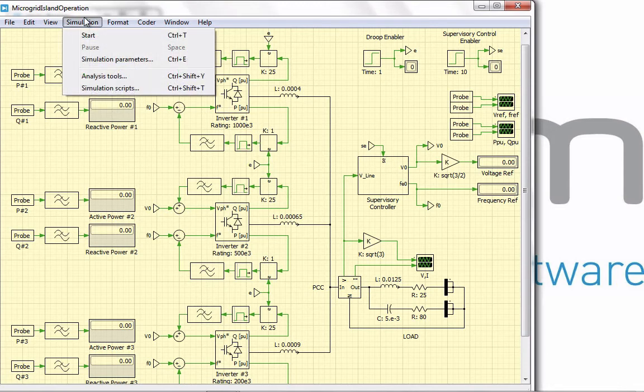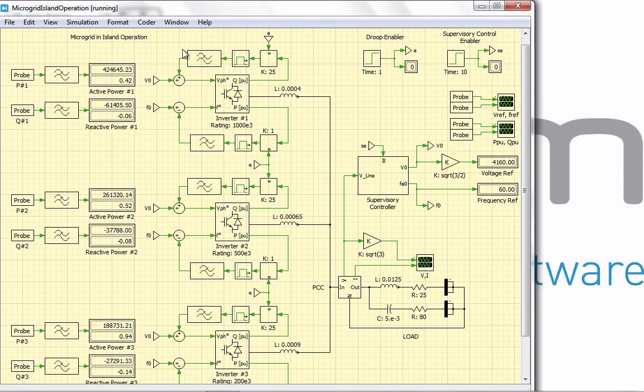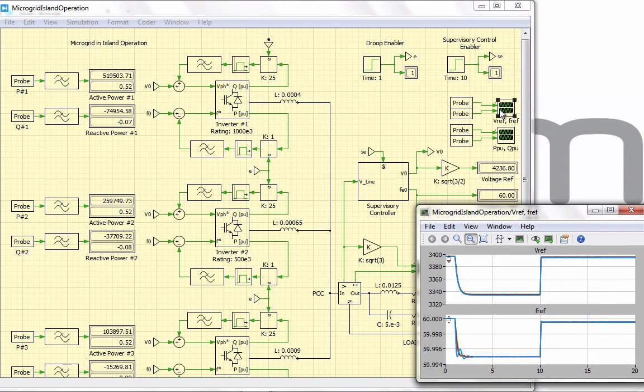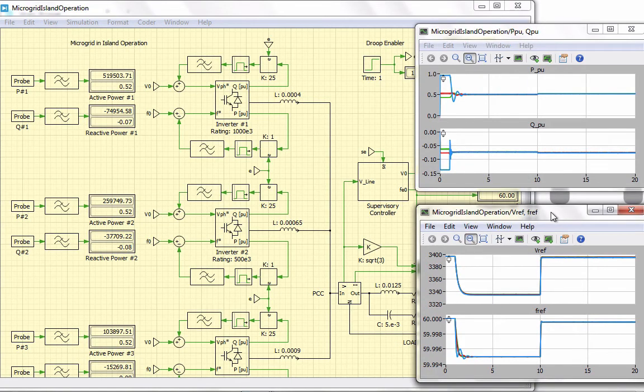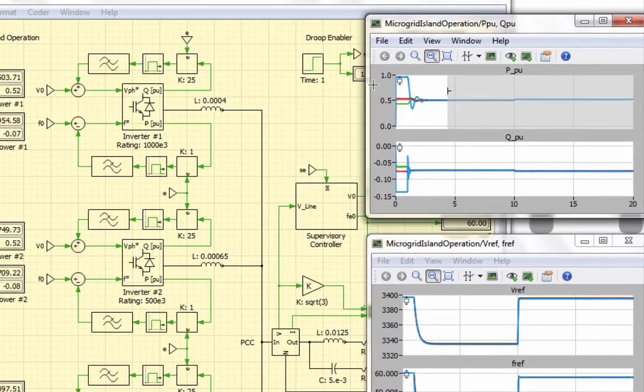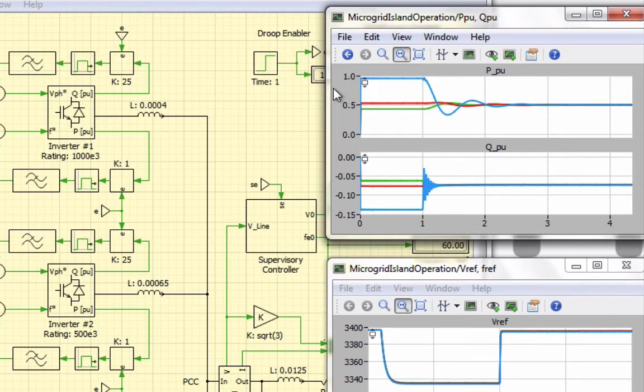Let's start the simulation now. Note that both the droop and supervisory controllers are not enabled at the beginning of the simulation. The droop controller is enabled at 1 second and the supervisory controller is enabled 10 seconds after the simulation starts. Let's observe the reference voltage and frequency waveforms as seen by the droop controller as well as the waveforms of per unit real and reactive powers. The unit with 200 kVA rating is close to overload at the beginning of the simulation when both the controllers are off.